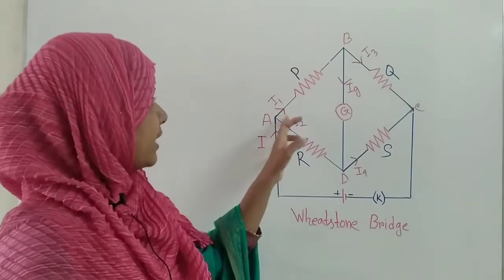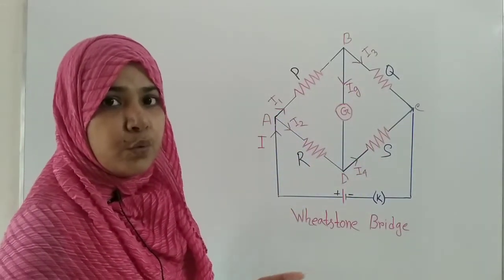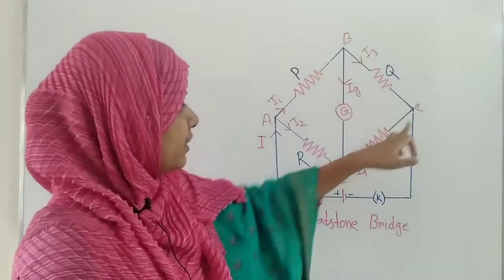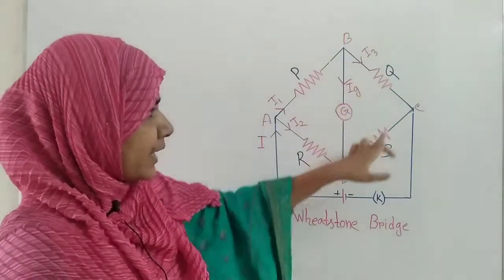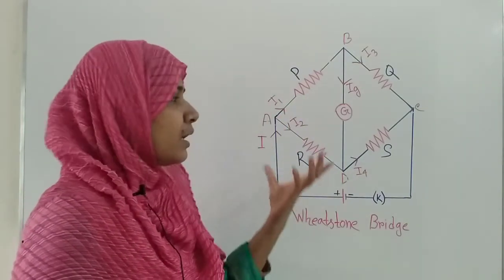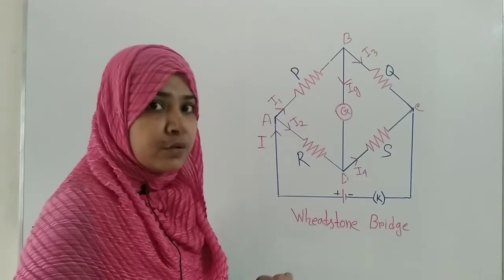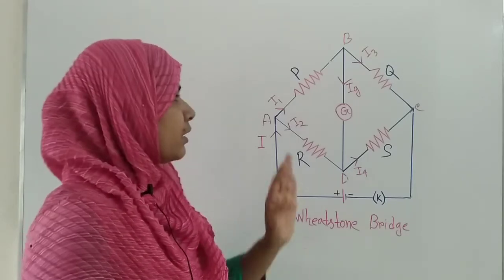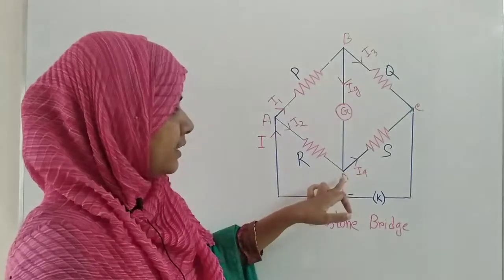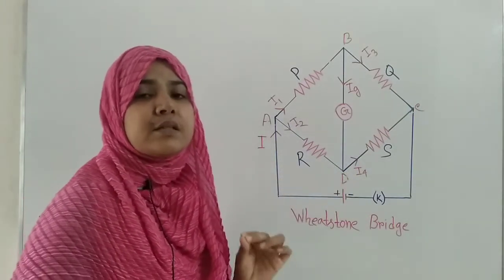And as the connection of these four resistances, they create a loop. We can say that A, B, C, D, A. By connecting these four resistances in series combination, a loop is created. And in this loop, there are four junction points: A, B, C and D. We can consider these four as junction points.